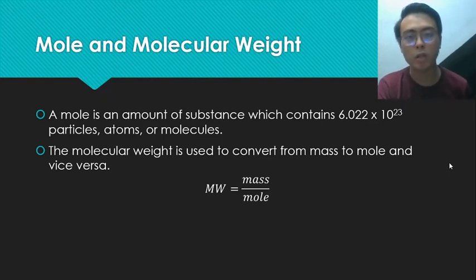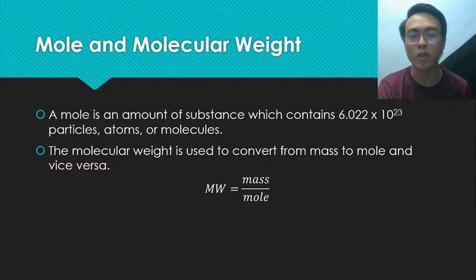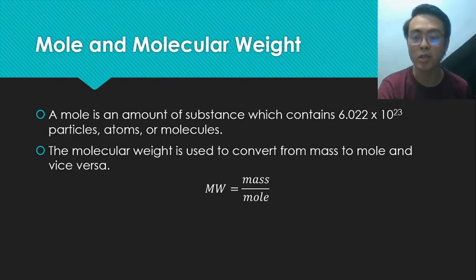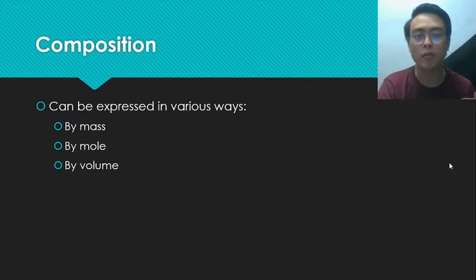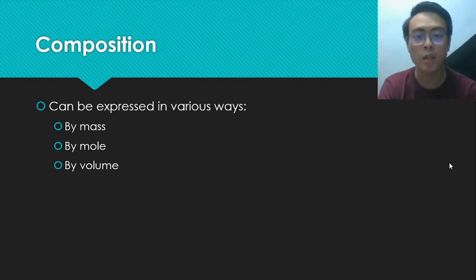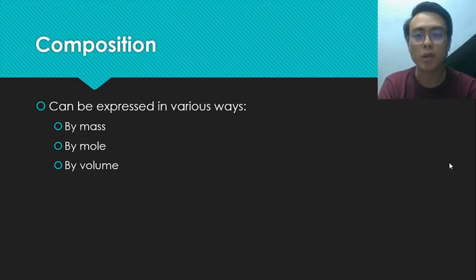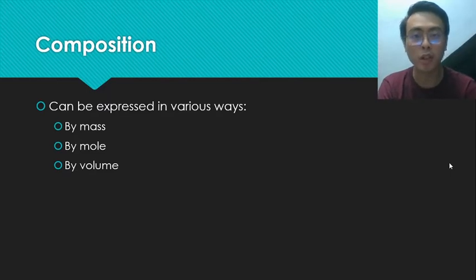We will mainly use moles and molecular weight when converting from molar composition to composition by mass. Speaking of composition, we can express it in various ways: percent by mass, percent by mole, or percent by volume. These are very important for chemical engineers because this is how we communicate what's inside a mixture.